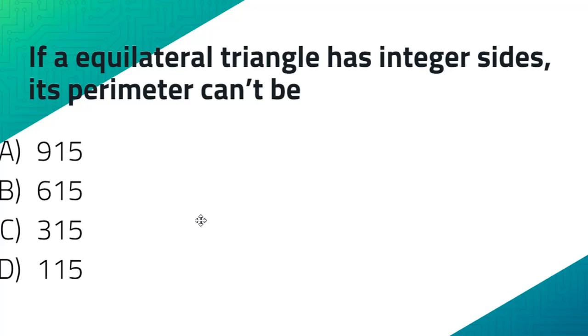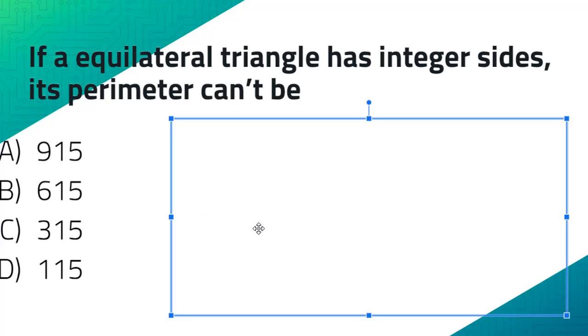Like I said in the last video, add up all the numbers and if that number is a multiple of three, that means it is divisible by three. So 9+1+5 would be 15, which is divisible by three. B, the total is 12, divisible by three. C, the total is 9, divisible by three. D, the total is 7, which is not divisible by three. So our answer would be D.